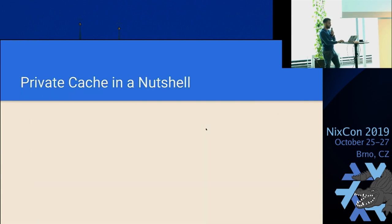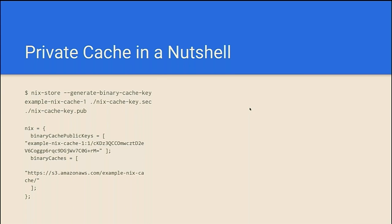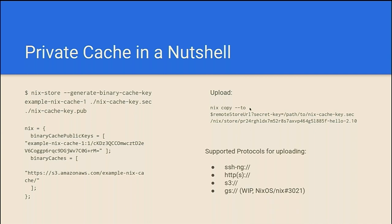So what you then do most of the time is you might have a Hydra or whatever does your build, but in general you go with a private cache of some sort that is added on your developer machines and they can make use of it. It's either self-hosted or based on some bucket in some cloud or entirely managed. You generate a signing key pair on one machine. On all machines that use this cache, you configure your NixOS configuration or your nix.conf to point to those endpoints, add the public key part of the signing key pair, and to upload you use some sort of nix copy command — supporting SSH, HTTPS, S3 buckets, and there's an in-progress PR to push to GCS buckets as well.